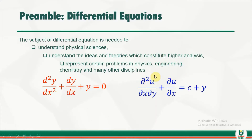This second example is called a partial differential equation. The dependent variable is u, while the independent variables are x and y. We also have the derivative of u with respect to x, and we have the second derivative of u with respect to x and y.